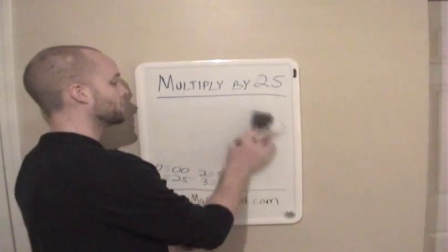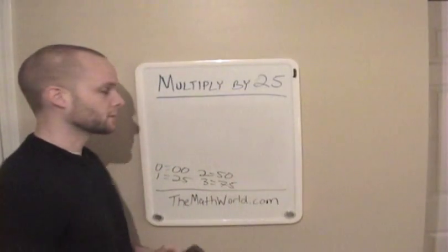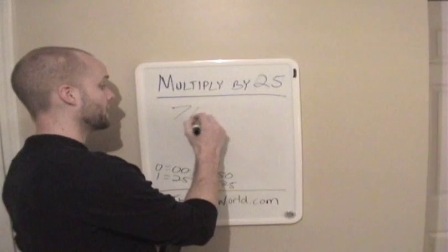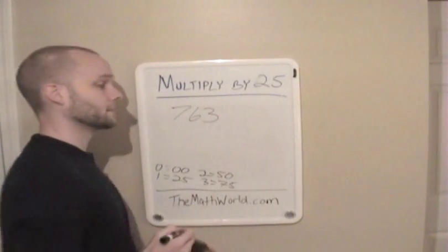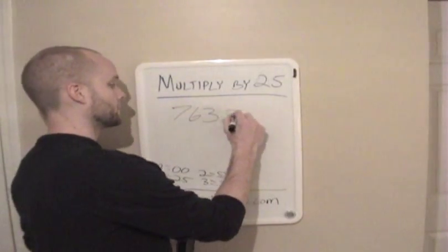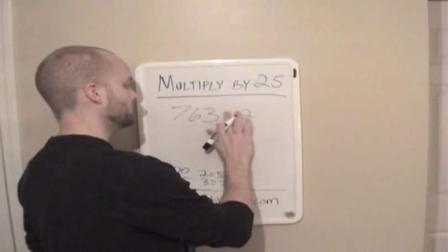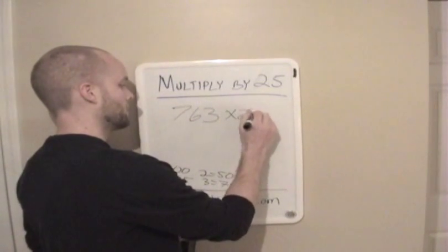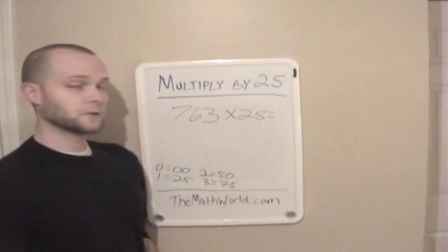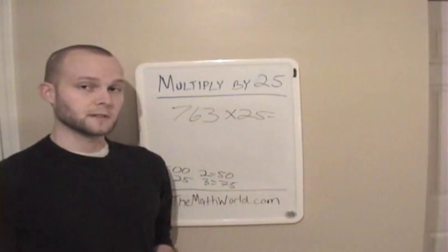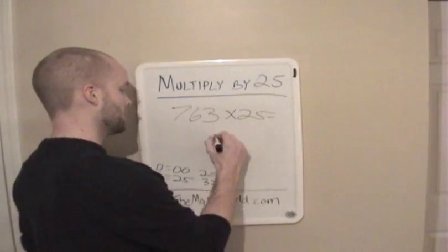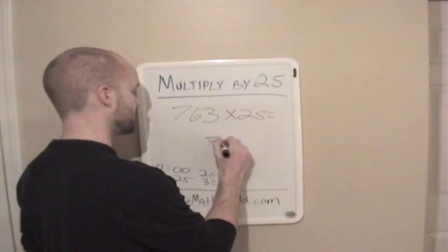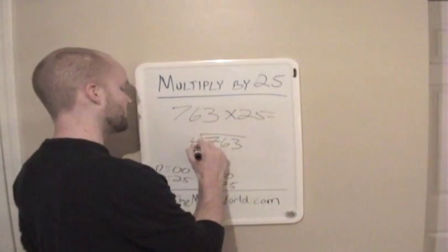So we'll go ahead and look at a little bigger number and see how that works with 25. So the next number we're going to look at is 763 times 25. And the first thing we're going to do is divide 763 by 4. So we'll go ahead and do that. 763 divided by 4.